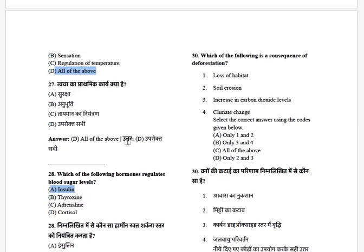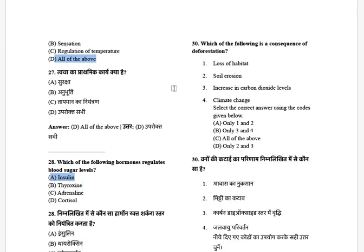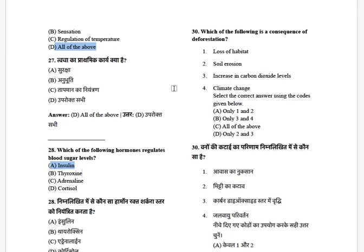Which of the following is a consequence of deforestation? The options are: loss of habitats, soil erosion, increase in carbon dioxide levels, and climate change. The answer is all of the above.